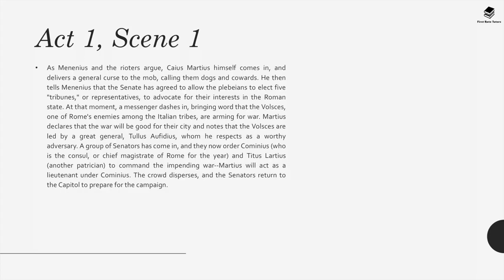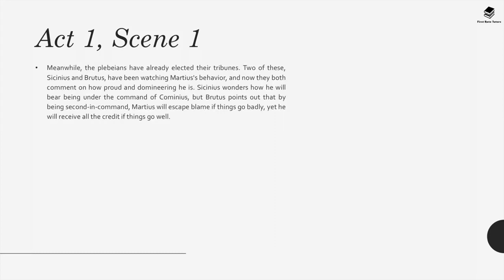Martius declares that war will be good for the city, and notes that the Volscians are led by a great general, Tullus Ophidius, whom he respects as a worthy adversary. A group of senators orders Cominius, the consul of Rome, and Titus Larcius to command the impending war; Martius will act as lieutenant under Cominius. The crowd disperses and the senators return to the capital. Meanwhile, the two newly elected tribunes, Sassinius and Brutus, comment on how proud and domineering Martius is. Brutus points out that as second in command, Martius will escape blame if things go badly, yet receive all the credit if things go well.